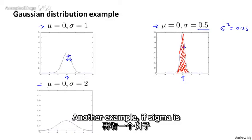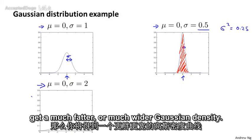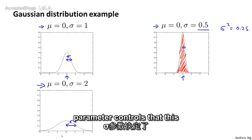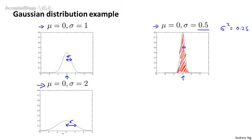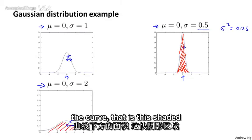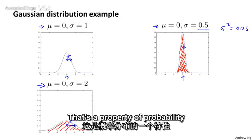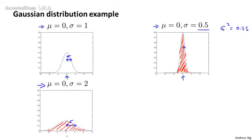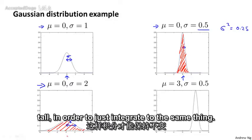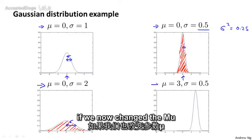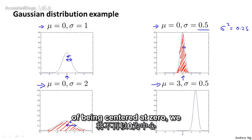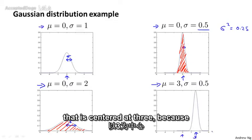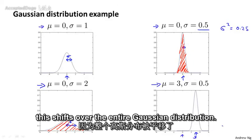Another example: if sigma equals two, you get a much wider Gaussian density. The sigma parameter controls a wider width, and again the area under the curve — the shaded area — always integrates to one, so it's also shorter. Finally, if we change the mu parameter as well, instead of being centered at zero, we now have a Gaussian distribution centered at three, because this shifts the entire Gaussian distribution.